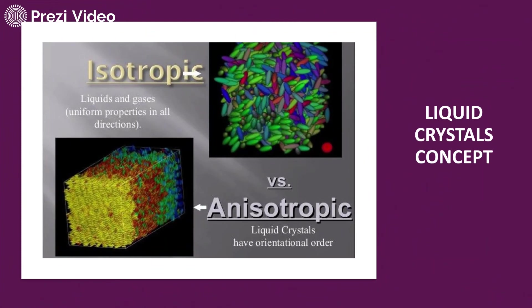Anisotropic basically refers to crystalline properties and isotropic refers to amorphous properties. In anisotropic liquid crystals, the molecular arrangement is highly ordered with specific orientation — liquid crystals have orientational orders. Isotropic liquids and gases have uniform properties in all directions. So anisotropic refers to solid liquid crystals with orientational orders, and isotropic refers to liquid and gaseous types. Liquid crystals are further classified into solid crystals, liquid crystals, and gaseous crystals.